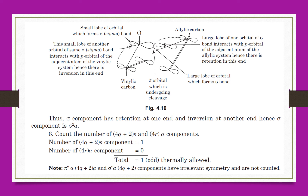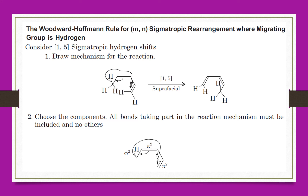Even though it is thermally allowed, you could also consider whether it is photochemically allowed. The Woodward-Hoffmann rule for M,N sigmatropic reactions requires us to draw the mechanism and identify all the components — the double bonds and all the bonds — and apply the selection rule accordingly.